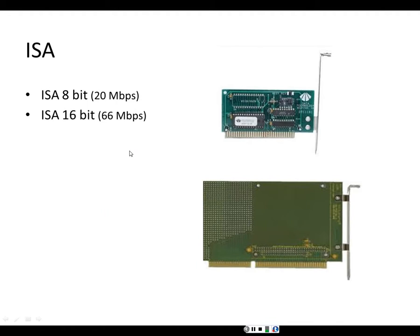One of the oldest types of PC buses is ISA (Industry Standard Architecture). ISA 8-bit was an 8-bit bus with a theoretical maximum of 20 megabits per second. ISA 16-bit was twice as wide and could send data at 66 megabits per second — not twice but three times faster — because not only is the bus width wider but it also runs at higher clock speeds. Nobody uses ISA 8-bit or 16-bit anymore.